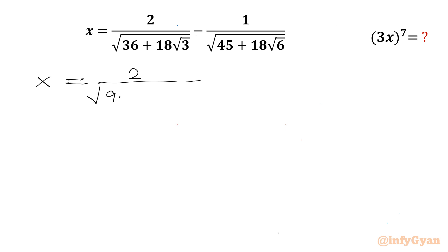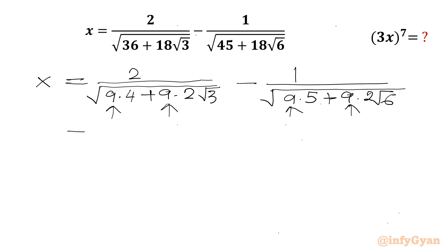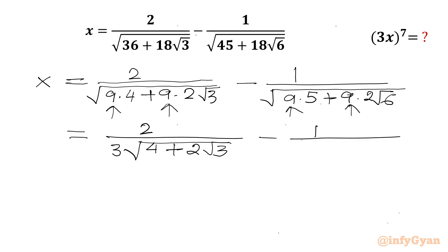In the first denominator, 36 can be written as 9 times 4, and 18 as 9 times 2, then root 3. For the other denominator, we can write 45 as 9 times 5 and 18 as 9 times 2, root 6. Now we take 9 common from the denominator and it comes out of the square root as 3, giving us 2 over 3 times √(4 + 2√3) minus 1 over 3 times √(5 + 2√6).